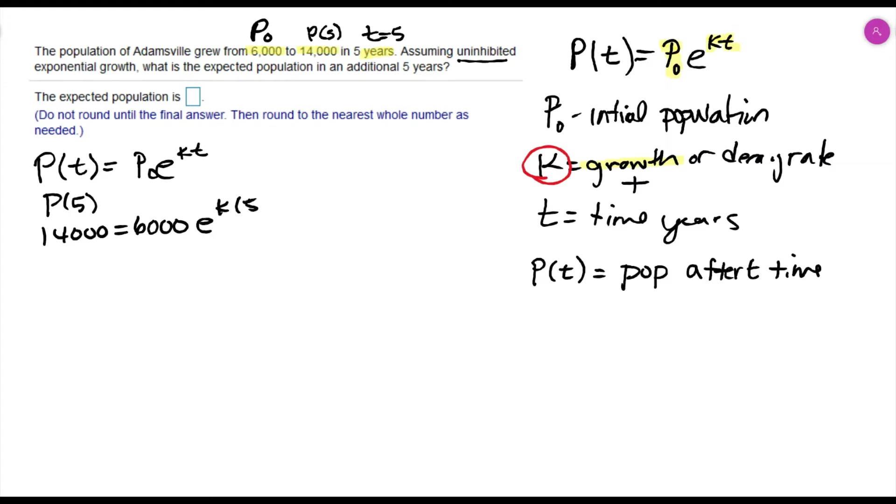14,000 equals 6,000 e to the k—I don't know k right now—but t is five, five years. Then I can divide both sides by 6,000.